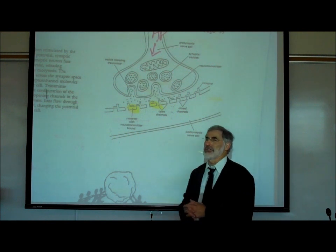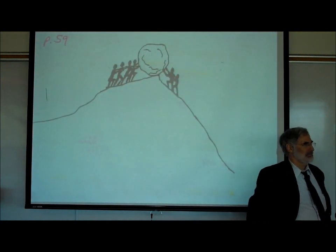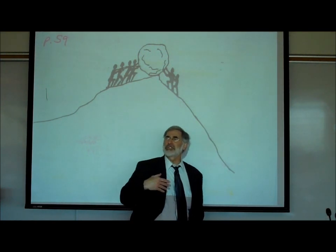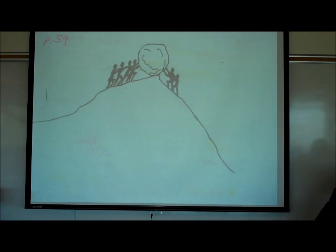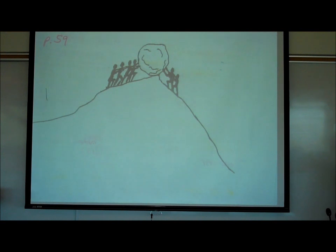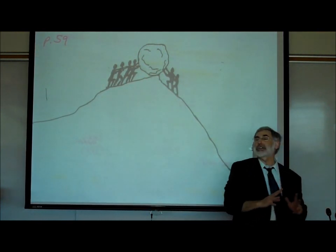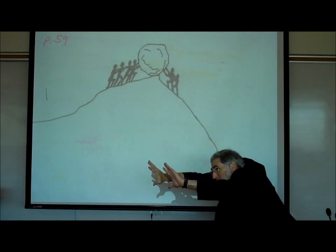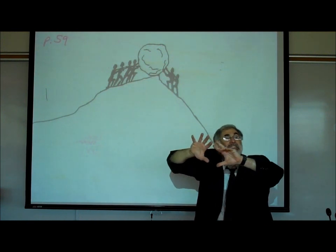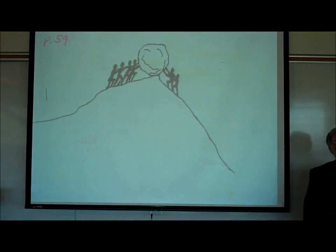Using the boulder analogy: excitatory neurotransmitters are trying to push the boulder over the cliff — trying to create an action potential by depolarizing the cell to threshold. Inhibitory neurotransmitters prevent the boulder from going over the cliff by making the inside of the cell more negative rather than less negative — pushing the boulder further away from the edge, making it less likely this cell will fire an action potential. Whether you get an action potential depends upon the overall sum — more excitatory or more inhibitory influence?